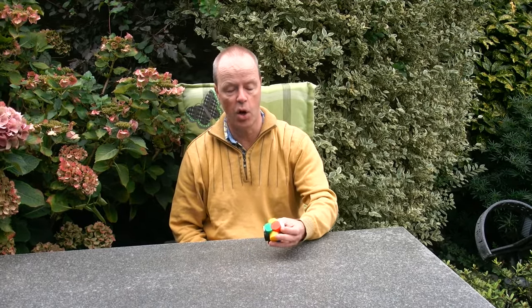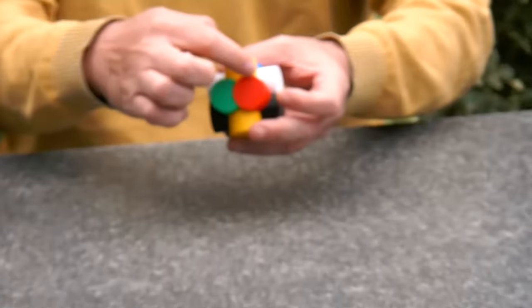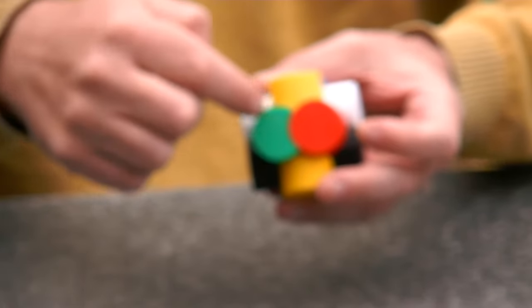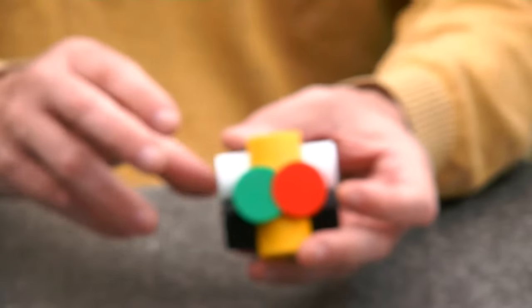Hi, I'm Oscar van Deventer and this is the OC Burr. The name of the burr is quite obvious. Here you see the letter O at the end, and this is sort of the letter C.